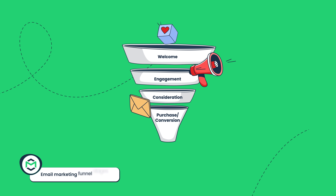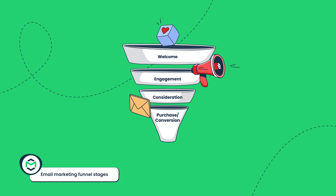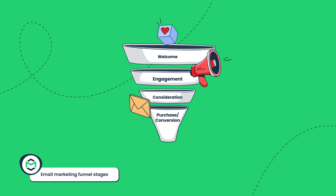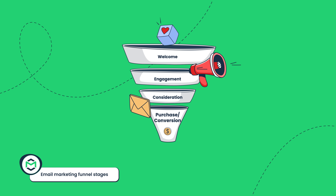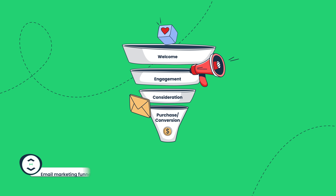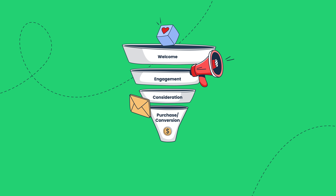Typically, an email marketing funnel consists of four stages: Welcome, Engagement, Consideration, and Purchase or Conversion. The welcome stage is the entry point to your email campaigns.